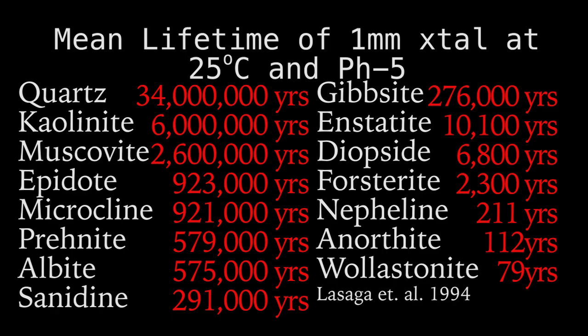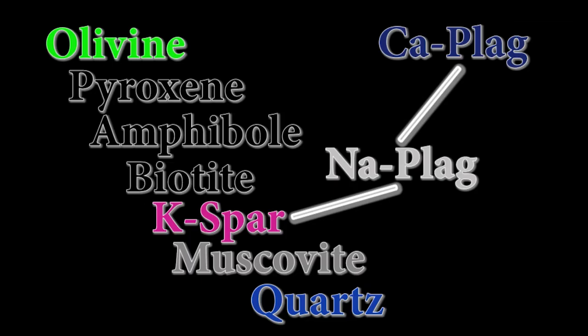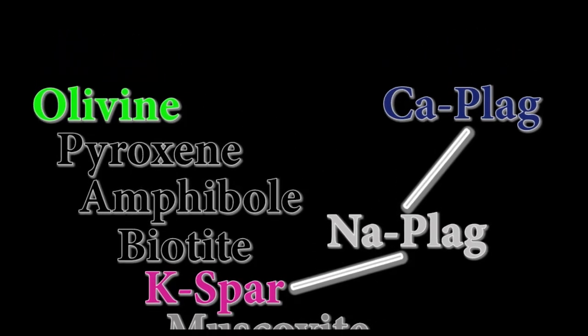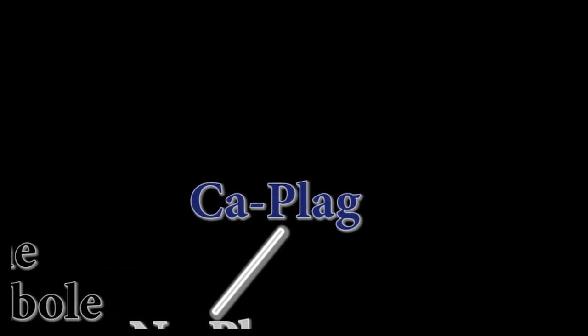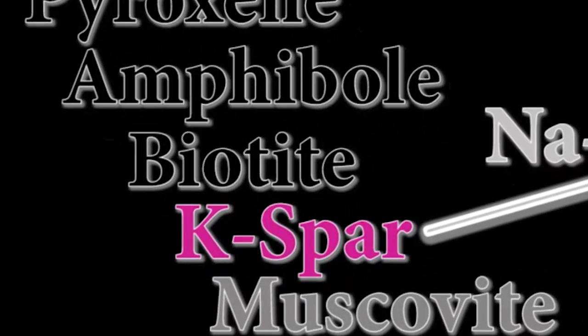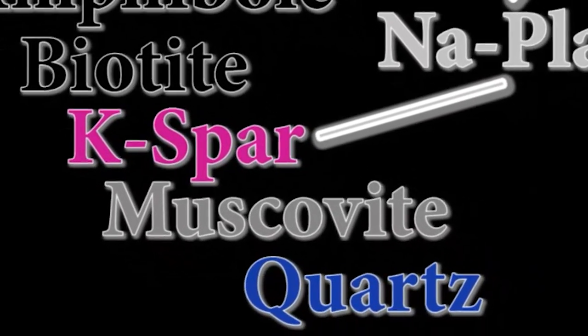Knowing which minerals are reactive and likely to weather away first, versus which minerals are resistant to erosion and are equilibrium products, are the main pedogenic indicators. Just a quick reminder that the Bowen's reaction series we visited in episode 14 not only tells us the order in which minerals freeze out of a melt, but also the relative stability at the surface, with the minerals at the top of the series like olivine, pyroxene, and calcium-rich plagioclase being the least stable at the surface and chemically weathering away the fastest. Quartz at the bottom is a stable mineral, and we should not be surprised to find it even in a well-weathered soil profile.